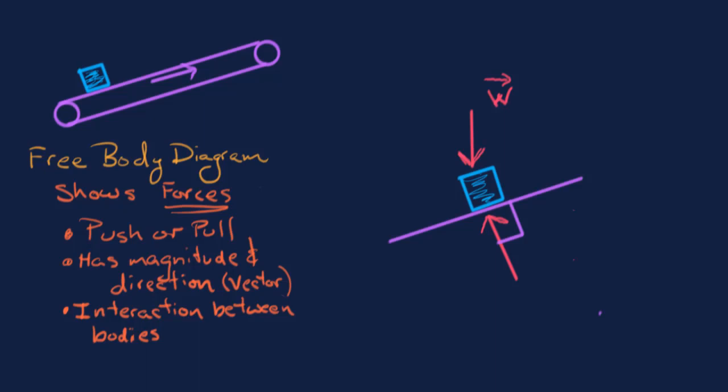If the belt surface is this purple line, then the normal force is perpendicular to that belt. I'll label this vector N with a little arrow above it to indicate it's a vector. The normal force prevents the ice block from penetrating through the belt — that's its purpose. That covers the perpendicular component of the force from the belt acting on the block.